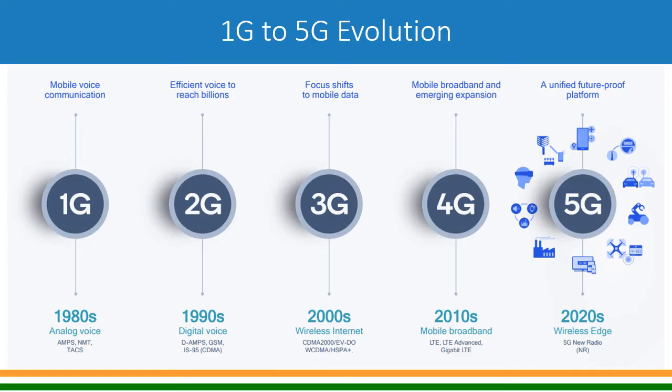From the 1990s to 2000, another ten-year gap, came 3G, and the focus shifted from voice to mobile data. We started enjoying wireless internet. The technologies approved by ITU as 3G were CDMA2000 EVDO and WCDMA and HSPA on the GSM side. The 3G network in India is still running by some operators like BSNL; other operators have moved to 4G services.